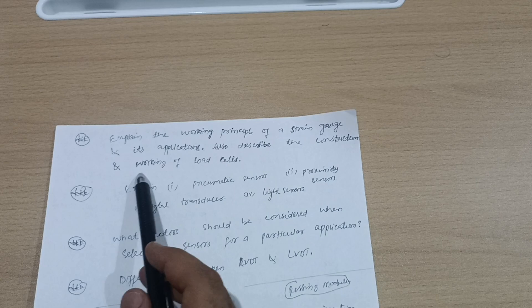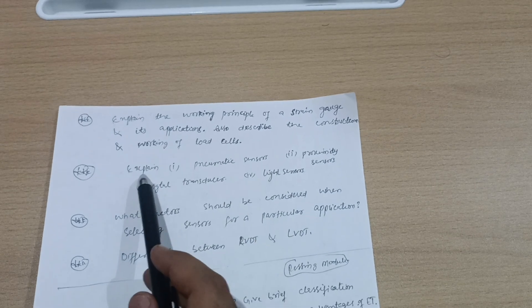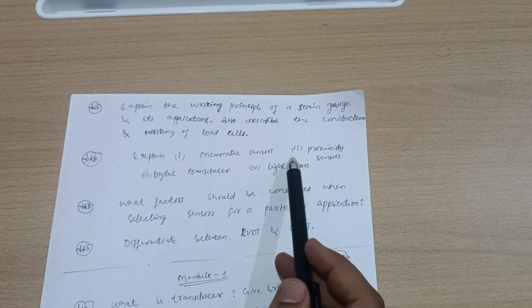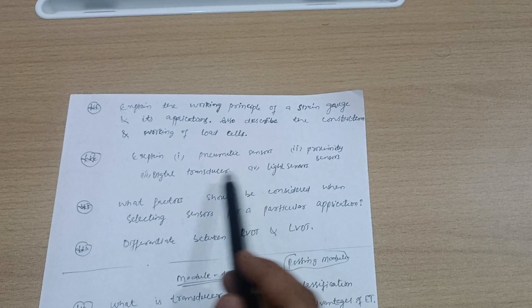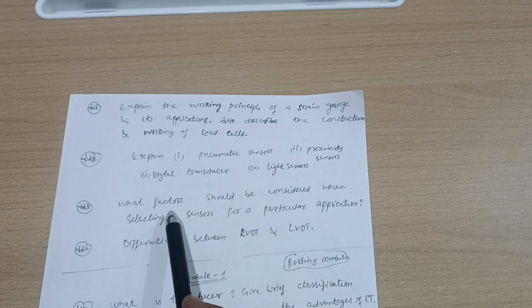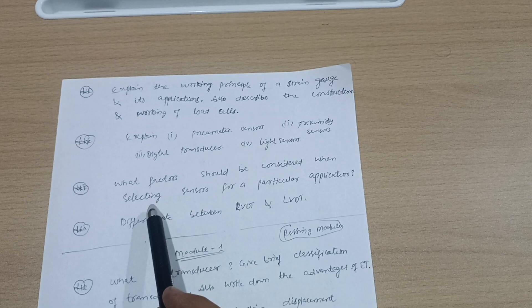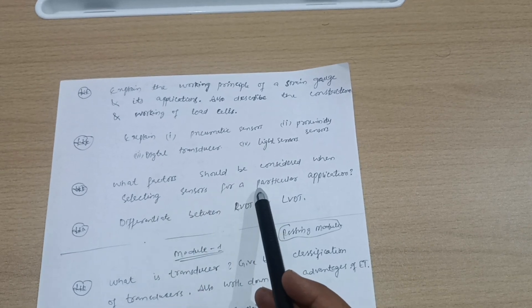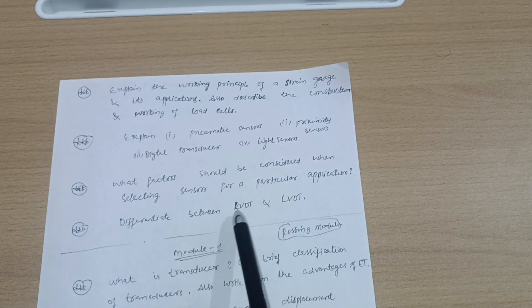Also describe the construction and working of load cells. Next is explain pneumatic sensors and proximity sensors, digital transducer and light sensors. What factors should be considered when selecting sensors for a particular application? Differentiate between RVDT and LVDT.